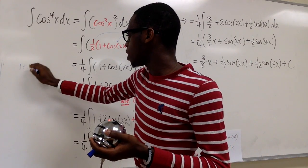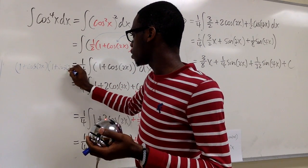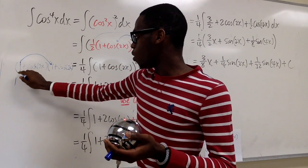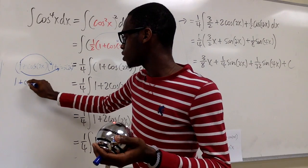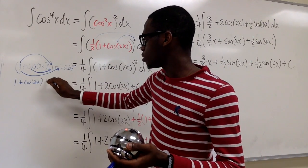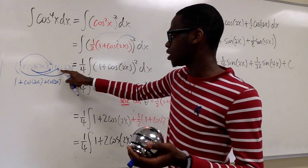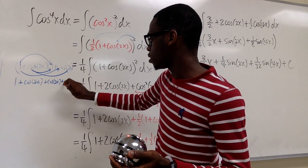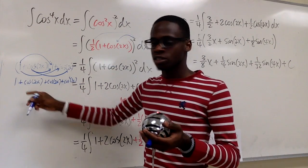Now we want to take the integral of this. We're going to do it by FOILing (1 + cos(2x)): one times one is one, one times cosine(2x) is positive cosine(2x), cosine(2x) times one is positive cosine(2x), and cosine(2x) times cosine(2x) is positive cosine squared(2x).